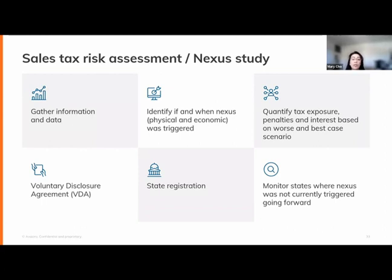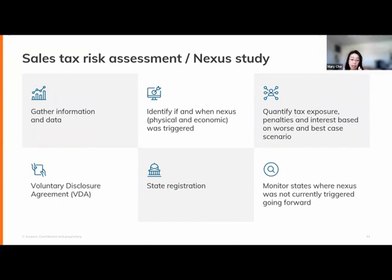We identify nexus in, say, 15 states, but what about the remaining states? Make sure you have a plan going forward to monitor those states so you're not in the same situation — liable for uncollected tax. Keep all 46 sales tax states in buckets: unregistered but should be, registered, and no nexus but monitoring going forward.